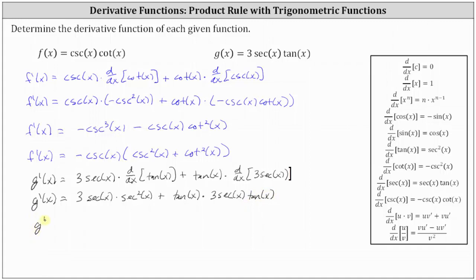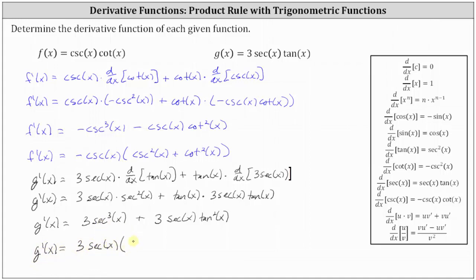This gives us g prime of x is equal to 3 secant x times the derivative of tangent x, which equals secant squared x, plus tangent x times the derivative of 3 secant x, which is 3 secant x tangent x. Simplifying, g prime of x equals 3 secant cubed x plus 3 secant x tangent squared x. Factoring out 3 secant x gives us g prime of x equals 3 secant x times the quantity secant squared x plus tangent squared x.